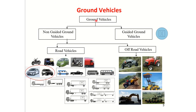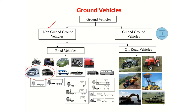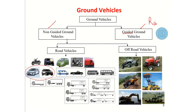Since vehicle dynamics is about ground vehicle dynamics, we consider only ground vehicles. Ground vehicles can be classified as guided ground vehicles and non-guided ground vehicles. Guided ground vehicles are those that travel on a fixed track — the track guides the vehicle. Trains are a classic example of guided ground vehicles.